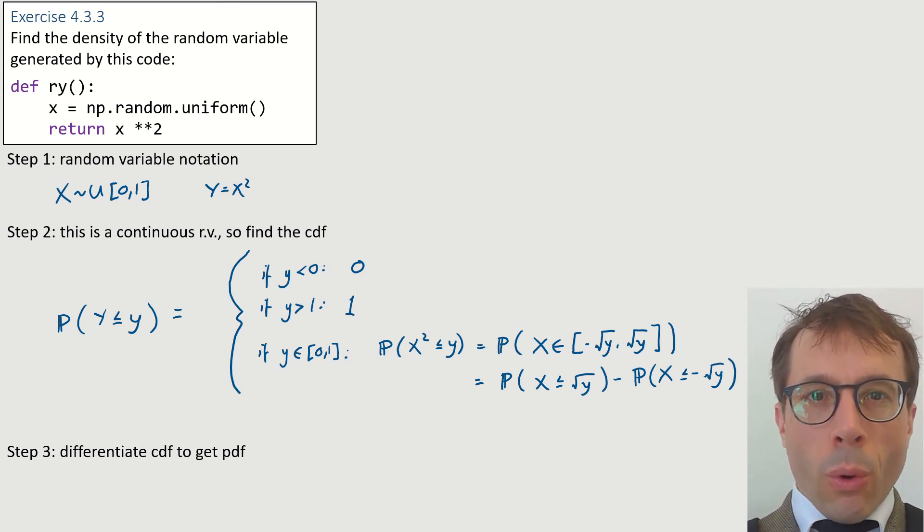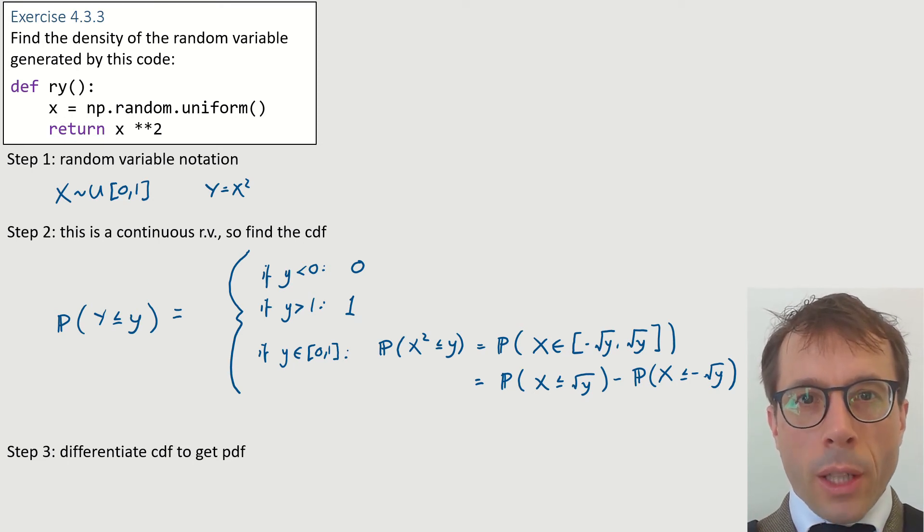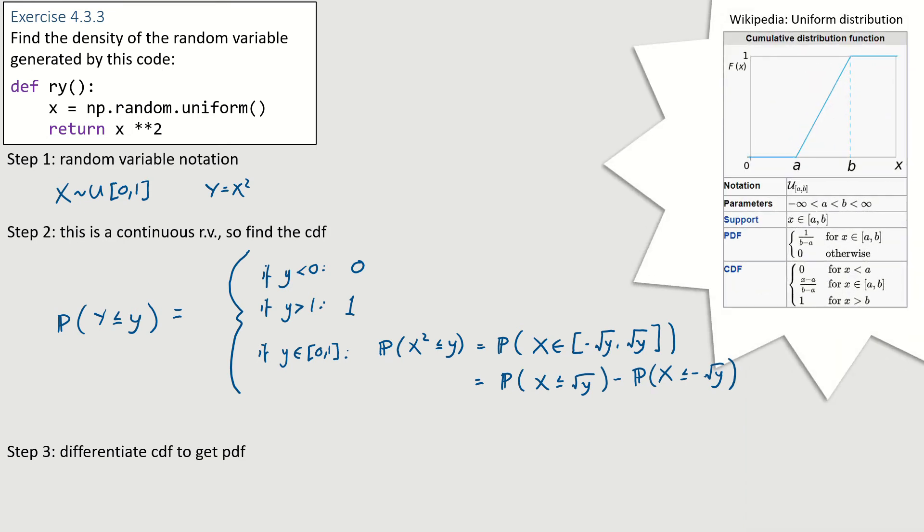Let's recap. The point of all this algebra is that x is a standard random variable, so I can look up its CDF on Wikipedia. But to use its CDF, I need to have my probability term looking like probability that x is less than or equal to something, and that's why I've been wrangling the probability into this form here. So let's look up Wikipedia. Here's what we get. Pause the video and make sure you can see where these two terms come from.